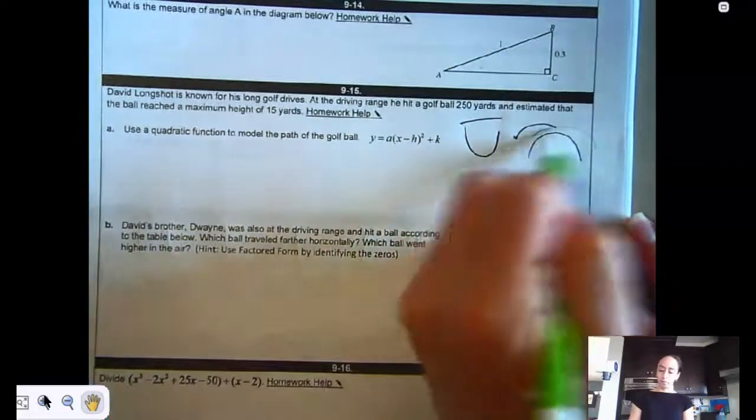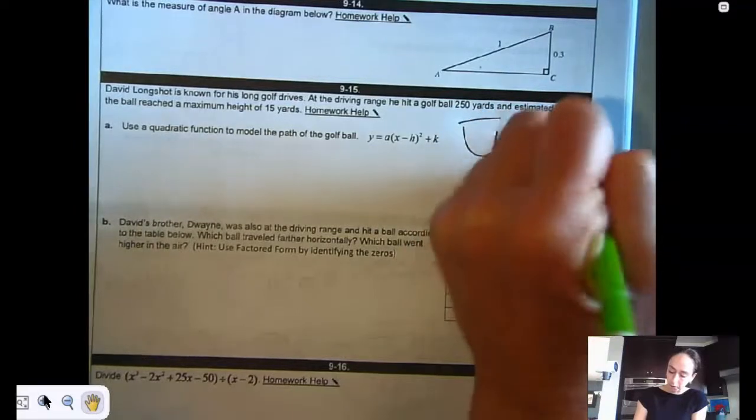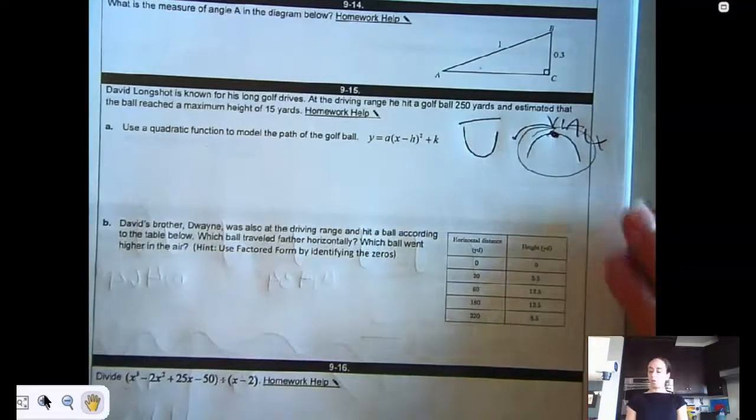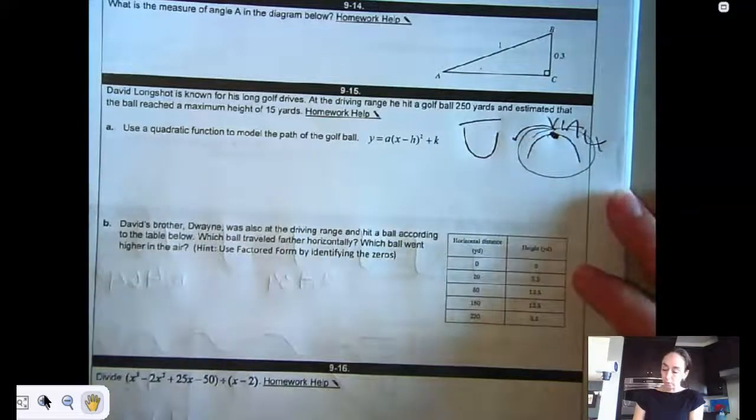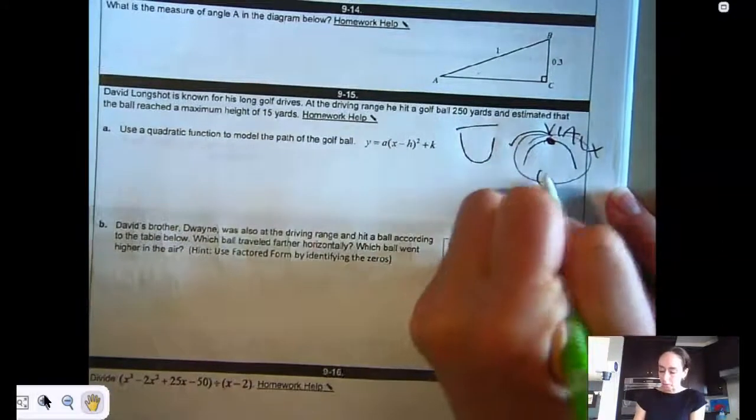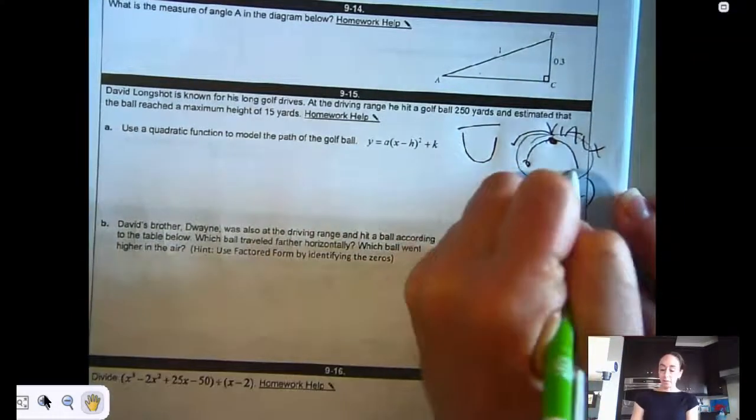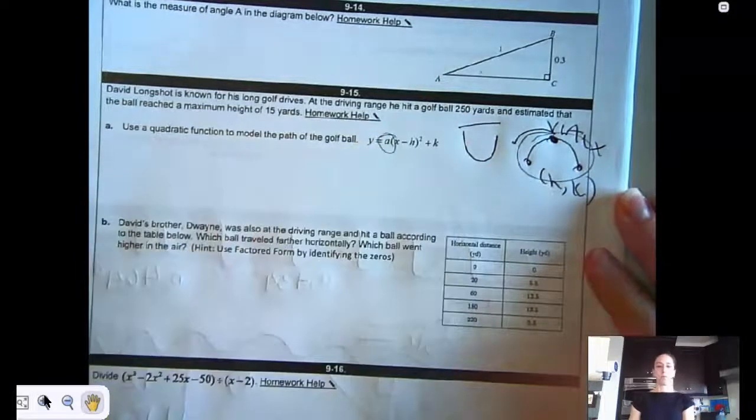Hopefully you're seeing it's this one, which means that would be your vertex. So do me a favor, use the information. You can get the vertex, and then once you get the vertex, which is H, K, you're going to use those X intercepts to find the value of A.